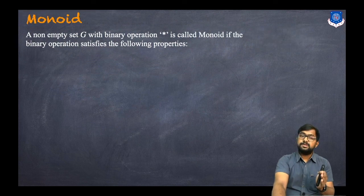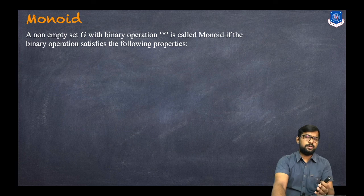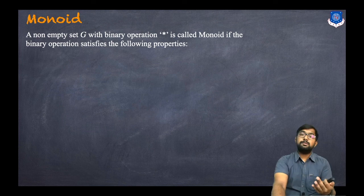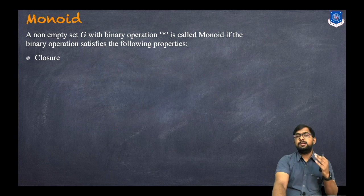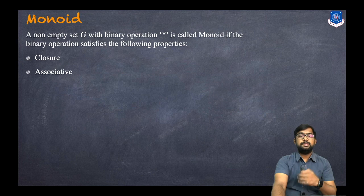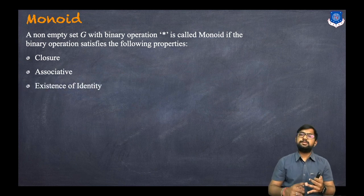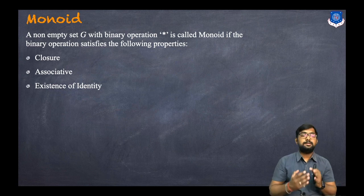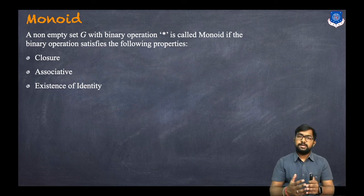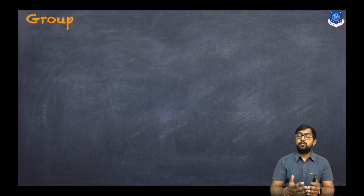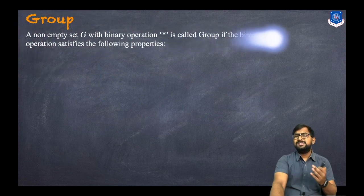The third algebraic structure is the monoid. A non-empty set G with binary operation star is called a monoid if it satisfies three properties: closure, associativity, and additionally the existence of an identity element.